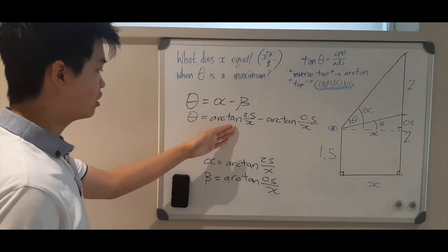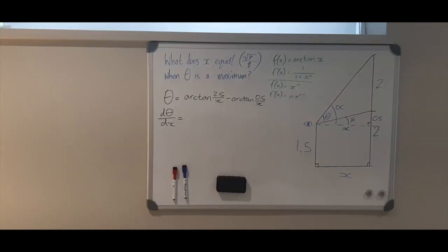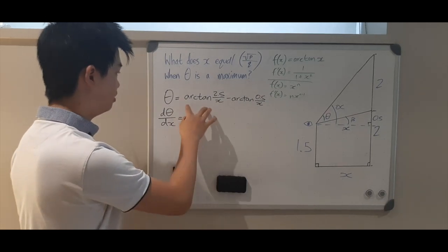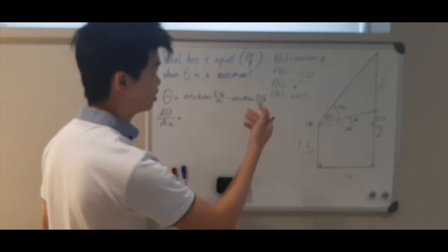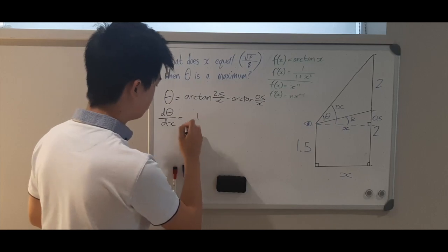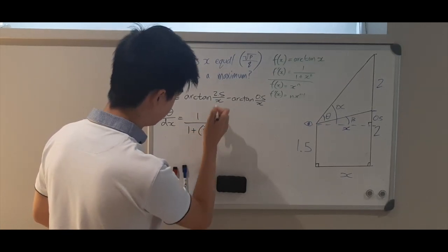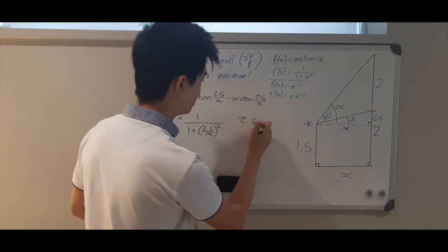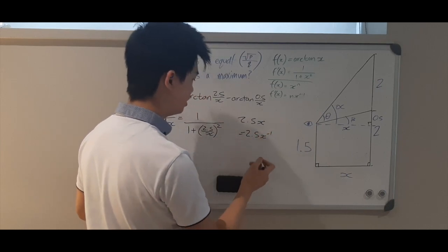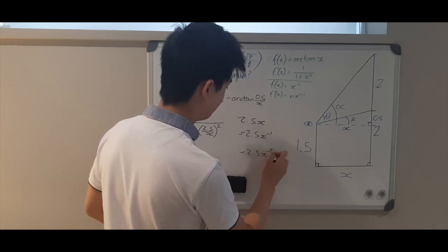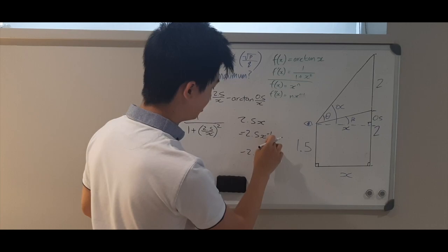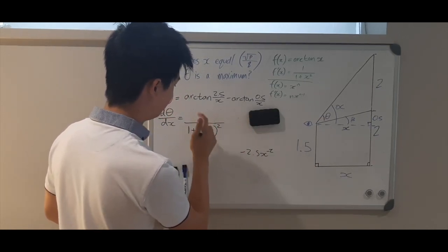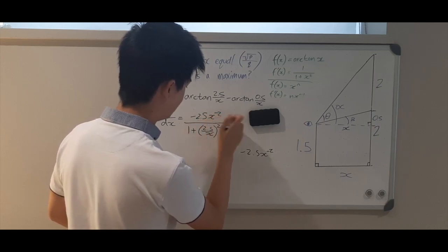Now we can plug these into our original equation: theta equals arctan(2.5/x) minus arctan(0.5/x). Now we have theta in terms of x, but we need to maximize it. We find the derivative d(theta)/dx. Using the rule that if f(x) = arctan(x) then f′(x) = 1/(1 + x²), and applying the chain rule where x is 2.5/x — expressed as 2.5x to the negative 1 — the derivative is negative 2.5x to the negative 2.